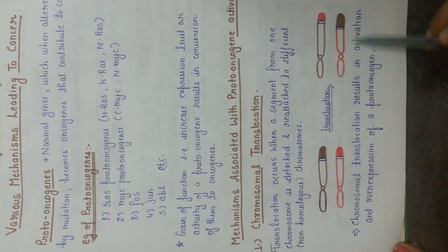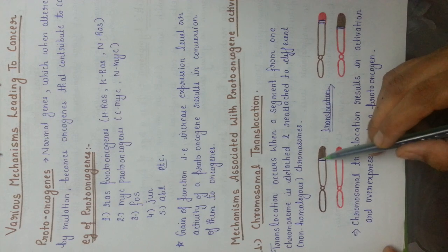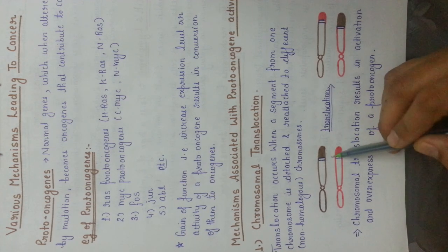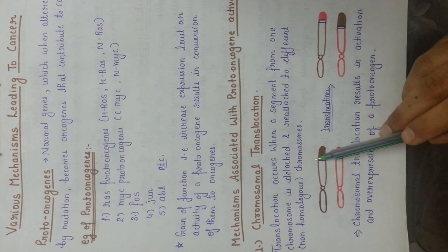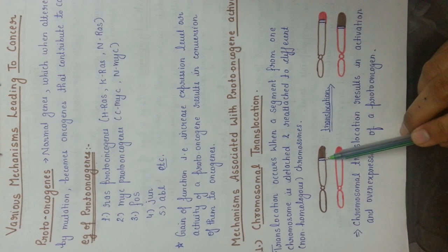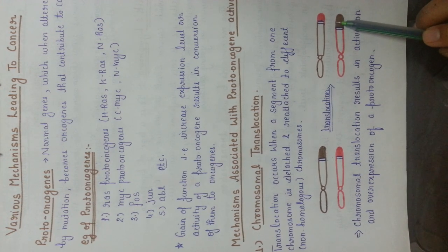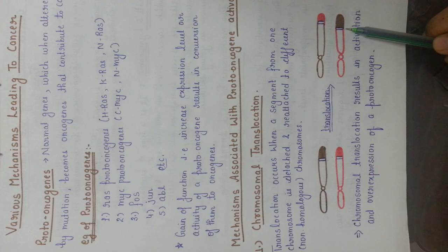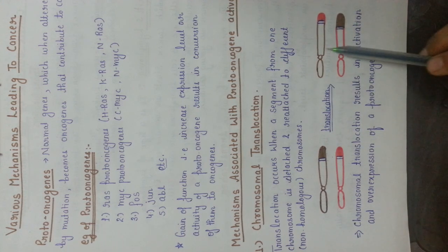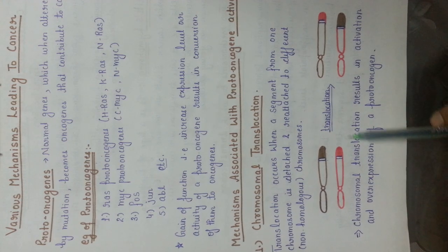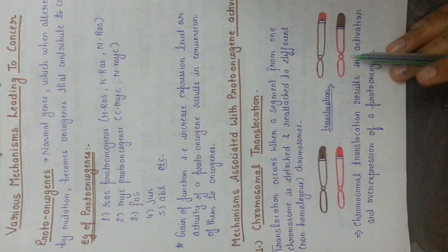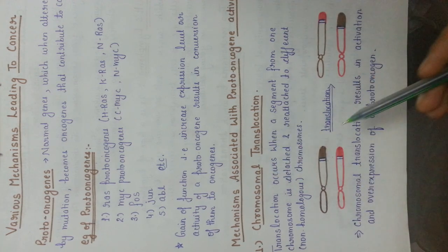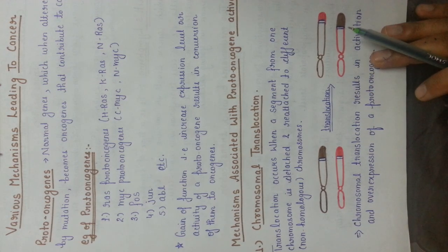This is what translocation looks like. There are two chromosomes, and there is a breakpoint — where the chromosome breaks down so it can detach its fragment. This particular segment will be detached through the breakpoint and translocated to another chromosome. This translocation may result in activation or overexpression of the proto-oncogenes, ultimately leading to gain of function and making them cancerous oncogenes.